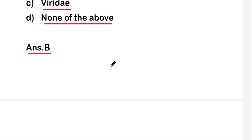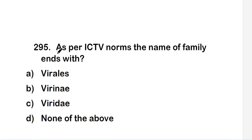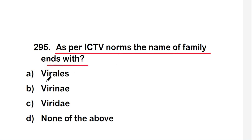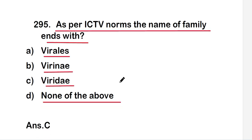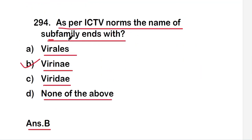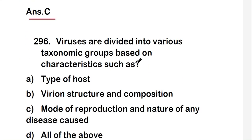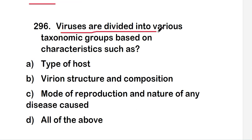Next question: as per ICTV norms, the name of a family ends with — virilis, virini, viridi, or none of the above? The right answer is option C, viridi. For the family level, the name of viruses ends with 'viridi', while for the subfamily level it ends with 'virini'.